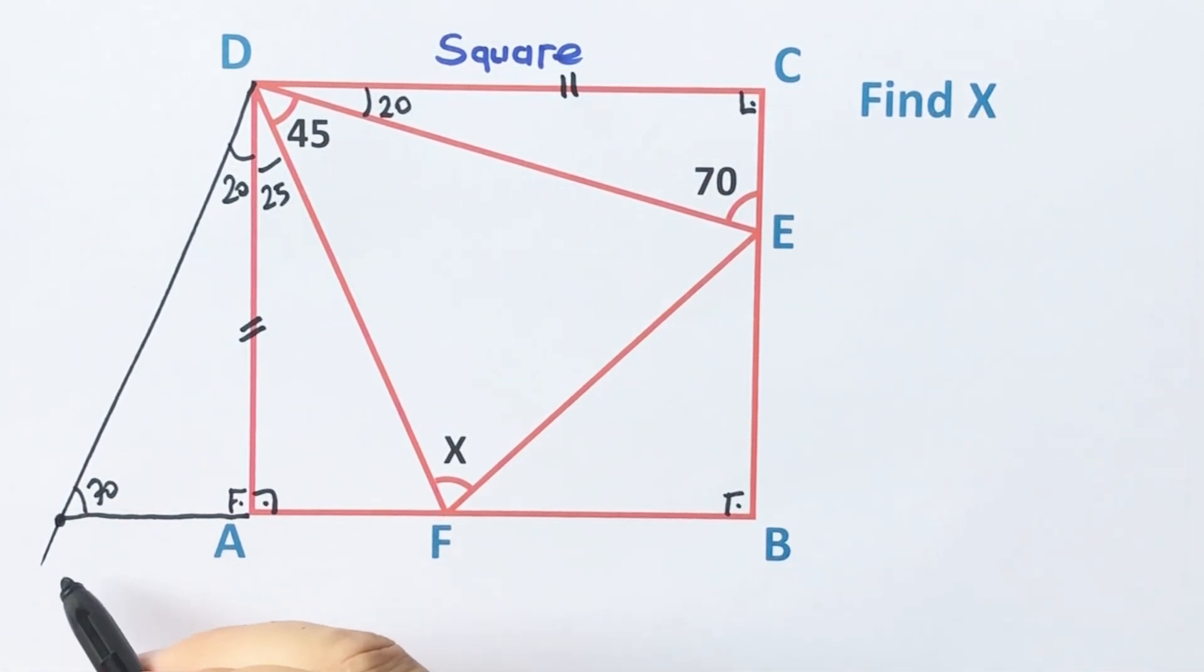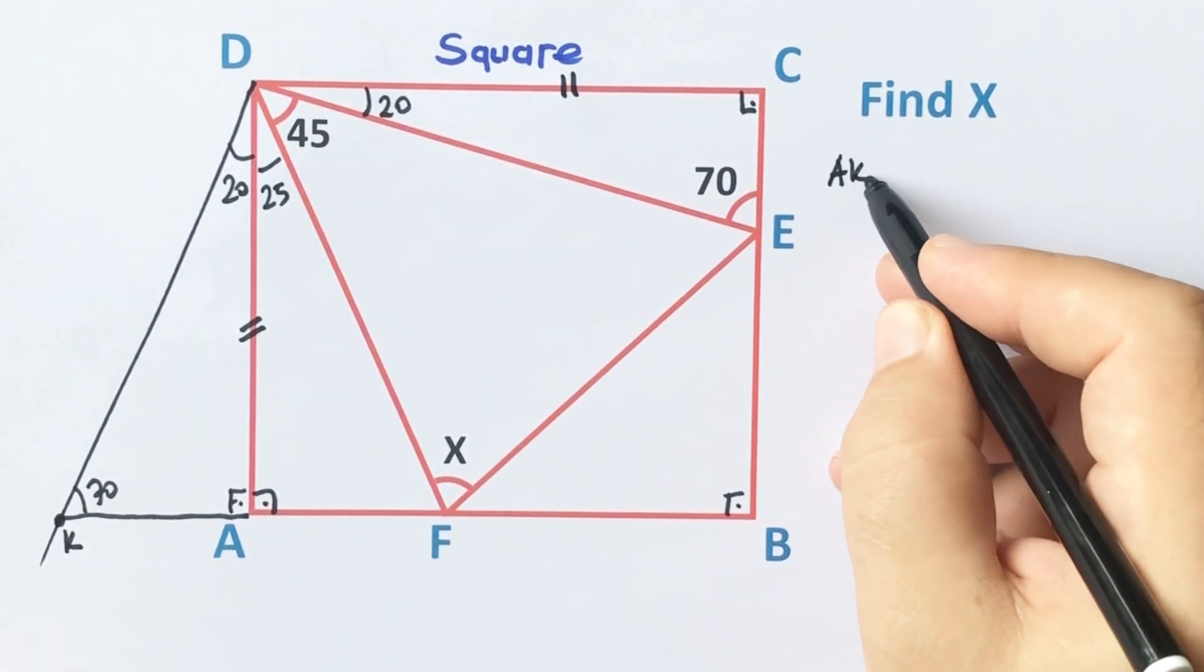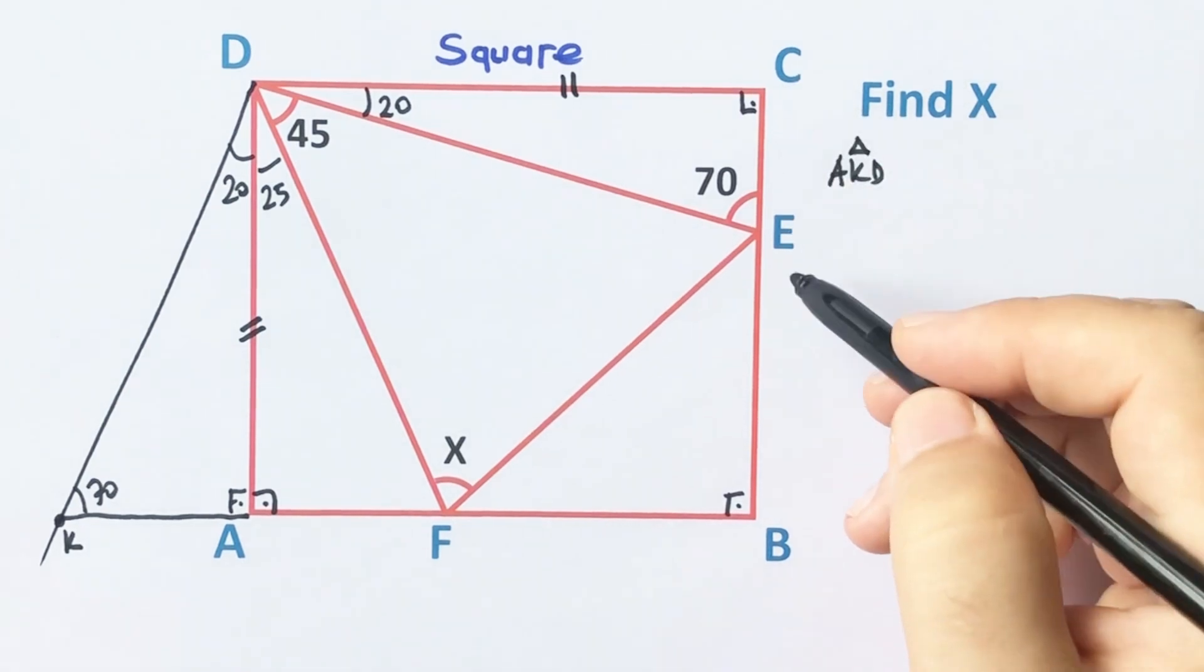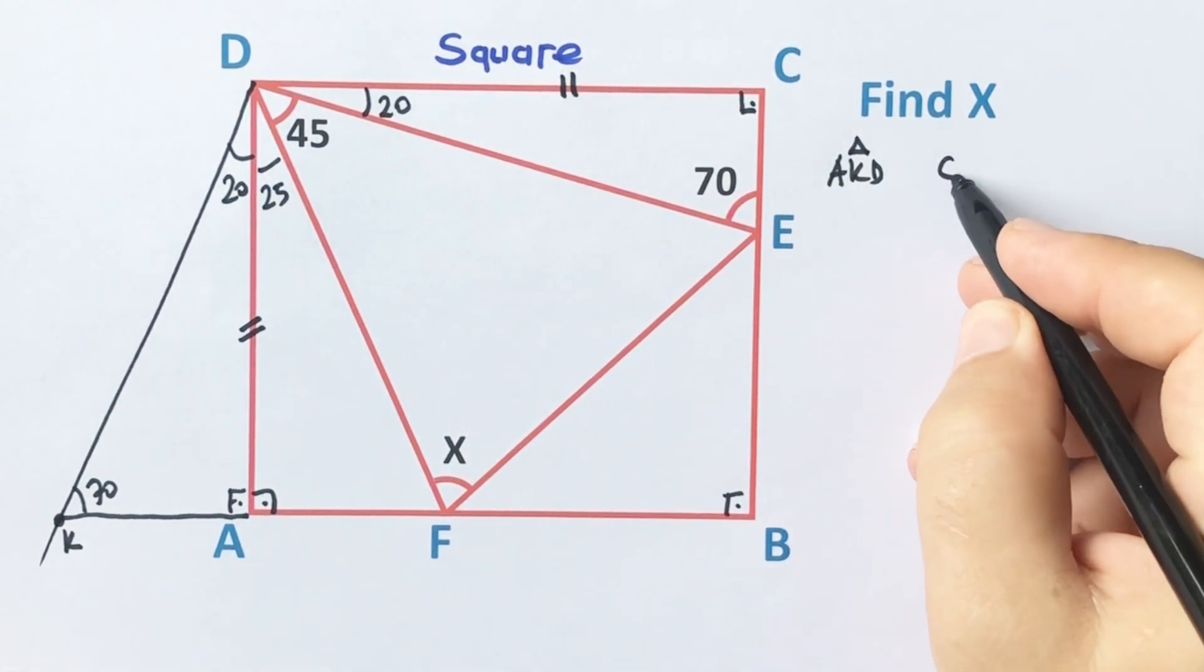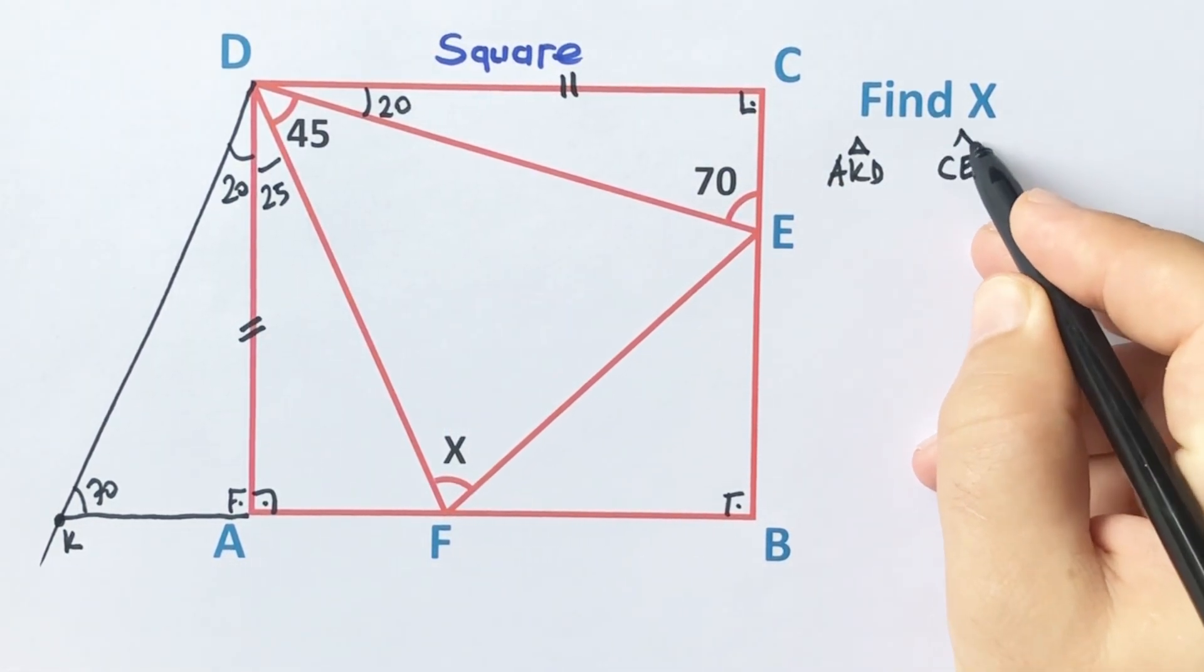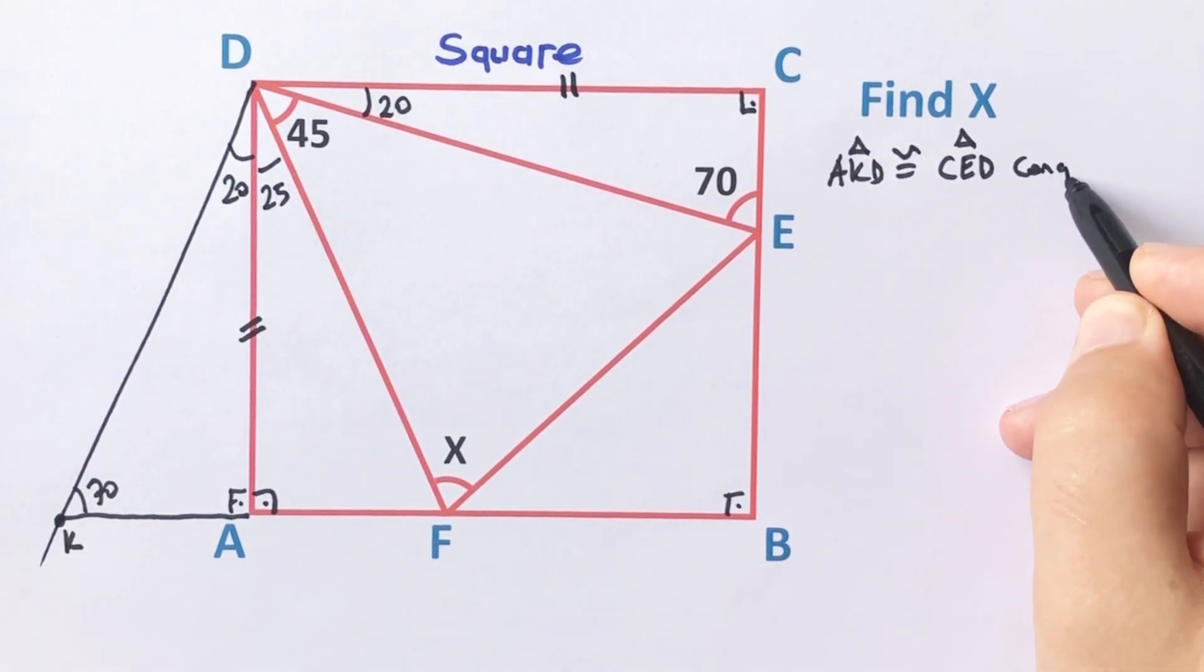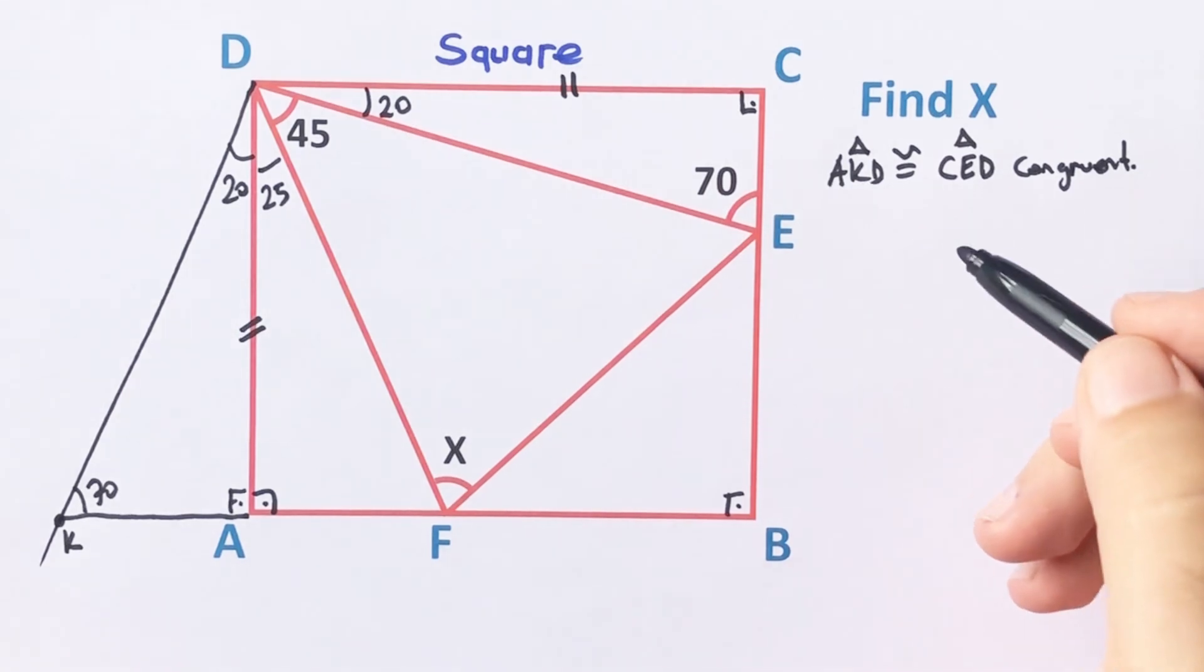Let's call here K point. AKD triangle and CED triangle are congruent. So we know that congruent triangles have same sides and same angles.